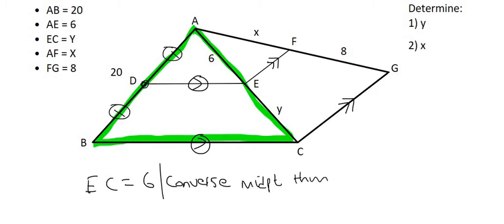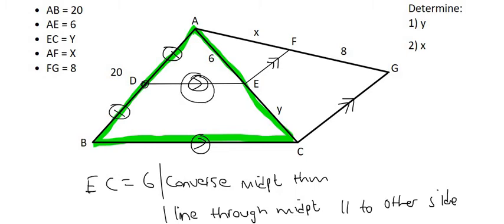Or your teacher might say line through midpoint parallel to other side. So it's the line going through D, which is a midpoint, and that line is parallel. So these two. So it's parallel to the other side. Okay, so EC is going to be 6, and that means Y is equal to 6.